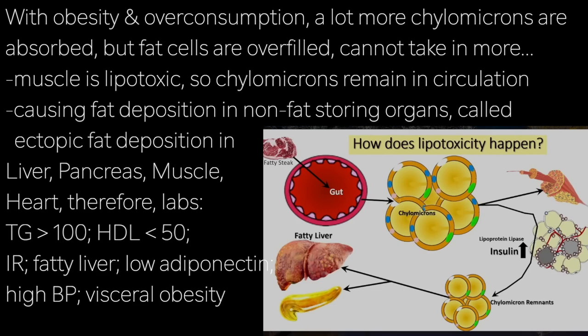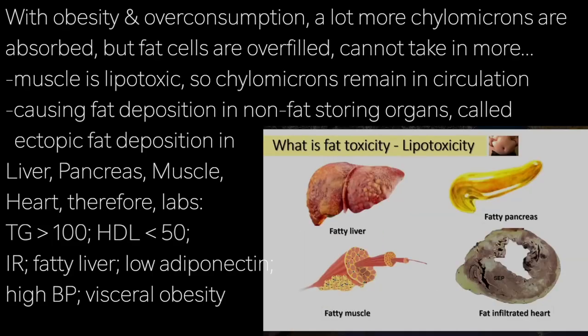Now with obesity and overconsumption, you have a lot more fat globules or chylomicrons that are absorbed. The trouble is that the fat cells say we are overfilled and we can't take any more. The muscle is lipotoxic. And so these fat-filled globules remain in circulation, causing fat deposition in organs that do not and should not have fat — that's called ectopic fat deposition in the liver, in the muscle, in the pancreas, in the heart.